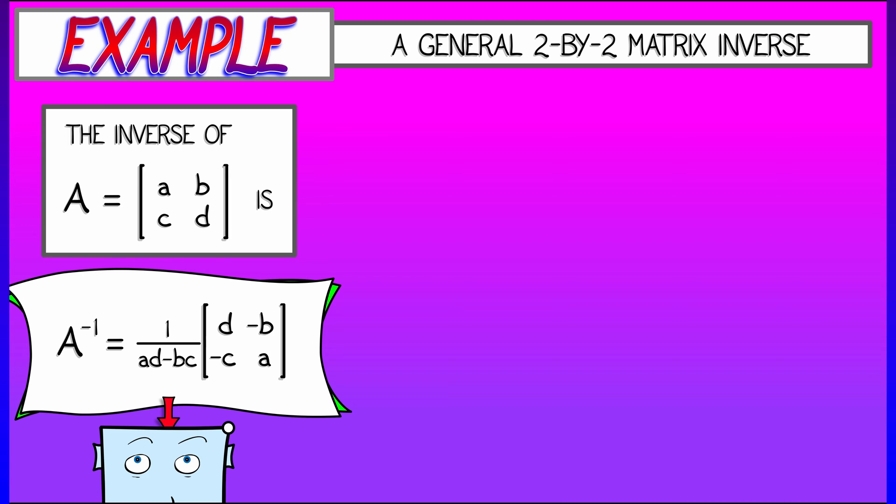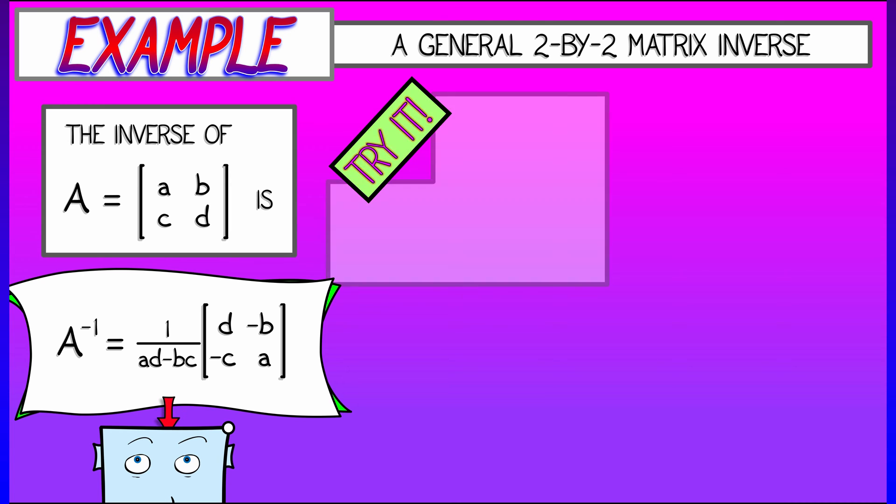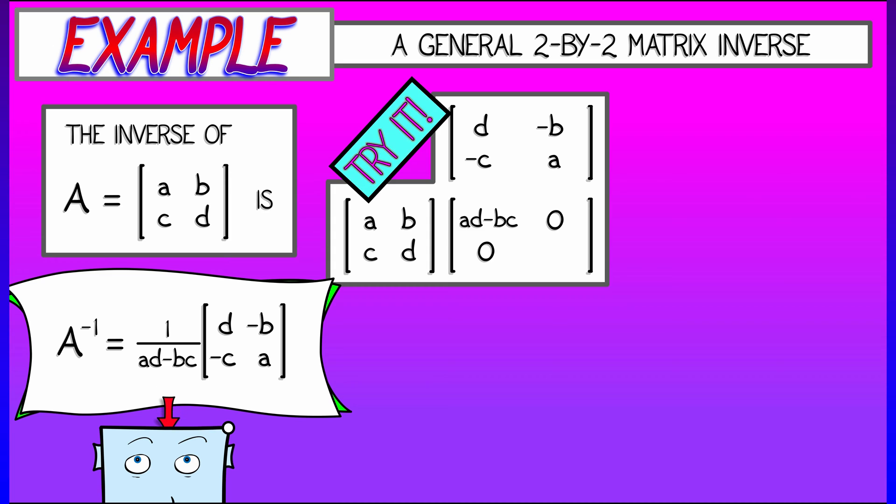But how do we get it? Why is this true? Well, let's just try. We can prove this directly, since we have a candidate. We can multiply ABCD times D, minus B, minus C, A, and what we're going to get is a diagonal matrix. And on those diagonal terms, we're going to have AD minus BC. That means if we scale or multiply by the reciprocal of that, then we're going to get the identity. Boom, that's it. We're done.